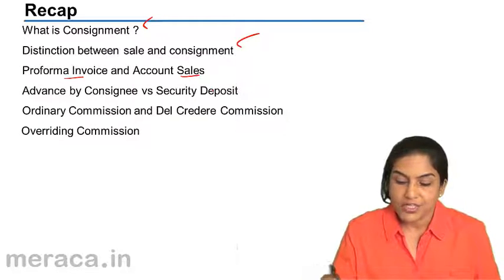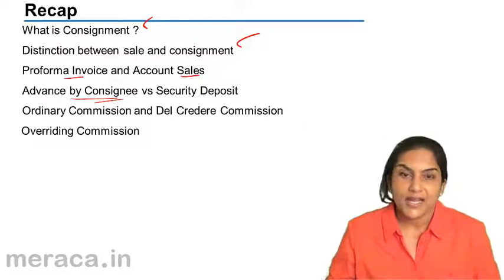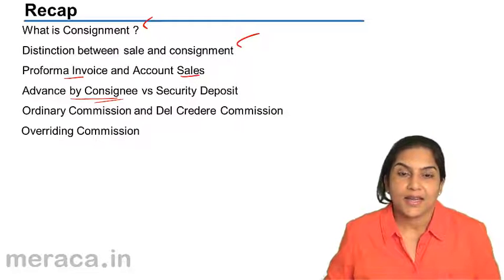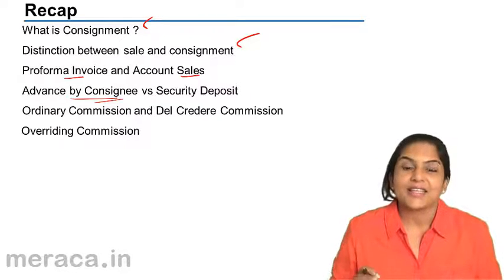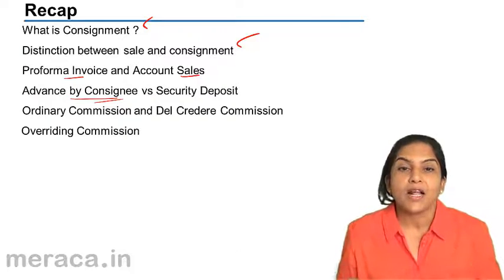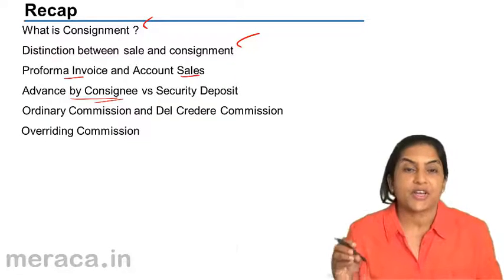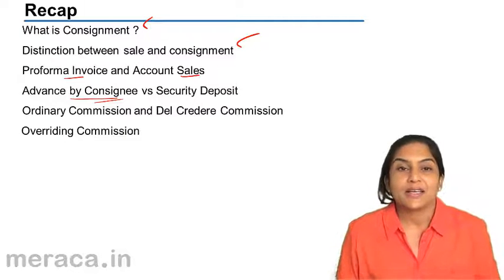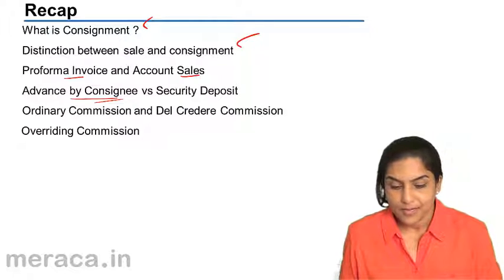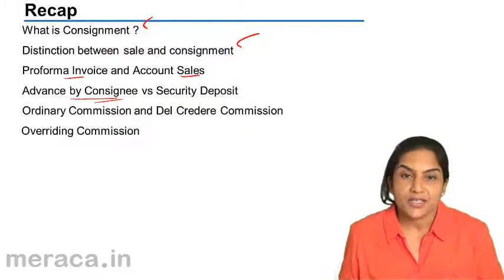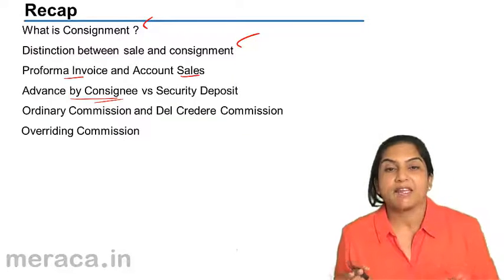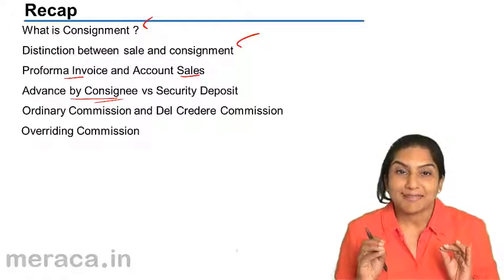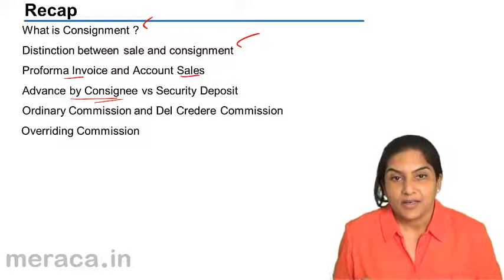There is also the concept of an advance paid by the consignee. For example, if $1,000 worth of goods are sent by the consignor to the consignee, on receipt of these goods the consignee may send a check or a bill of exchange for a certain amount — maybe 75% or 80% of the value — so a check or bill for $800 would be sent to the consignor. This is an advance. Sometimes, instead of an advance, an amount is maintained by the consignor as a security deposit — perhaps 60% of the value of the goods.